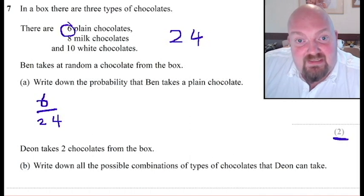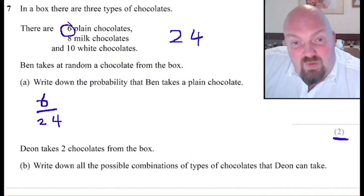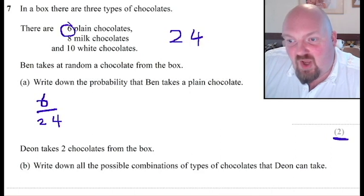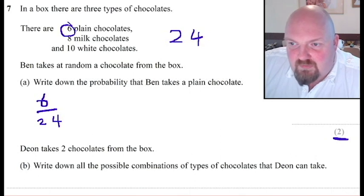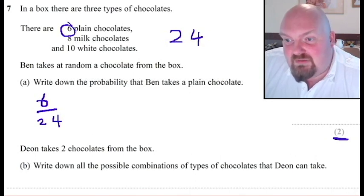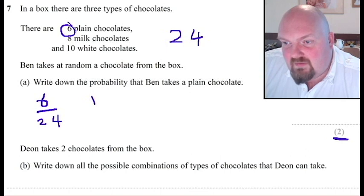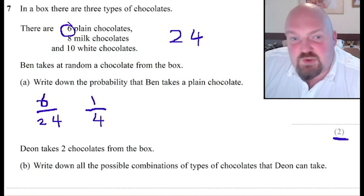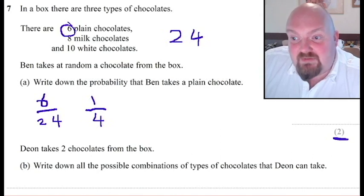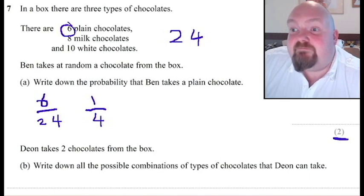So what it wants us to do is to simplify it. With any simplifying, what you're doing is you're finding the highest common factor of these two numbers, so in this case six and twenty-four. You're basically looking for the biggest number that you can divide six by and you can divide twenty-four by. So in this case it's six. How many sixes are there in six? There's one. And how many sixes are there in twenty-four? There are four. So for two marks, my answer is one quarter. So a quarter of those chocolates are going to be plain.